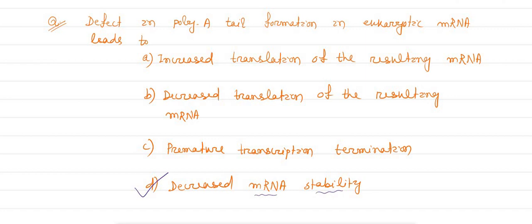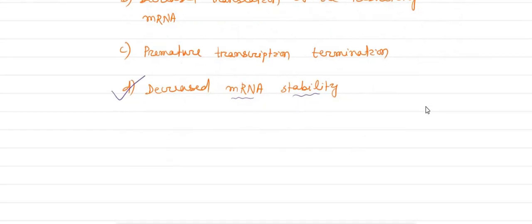That is translation. So if any defect or failure of attachment of poly-A tail happens, it leads to decreased mRNA stability. Here, I am writing the explanation.